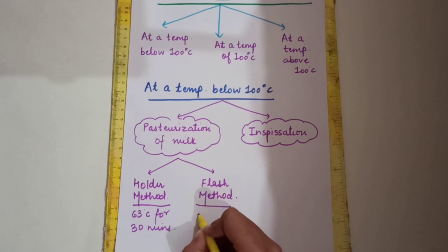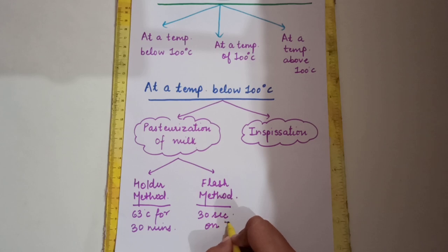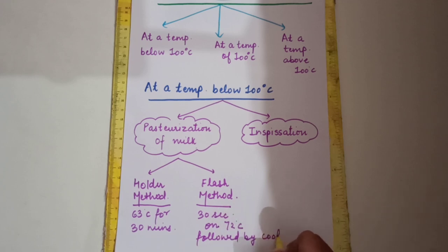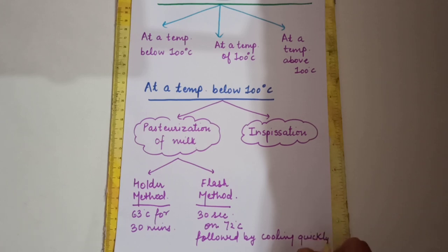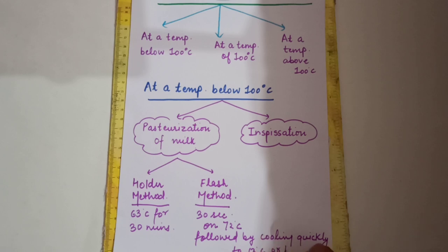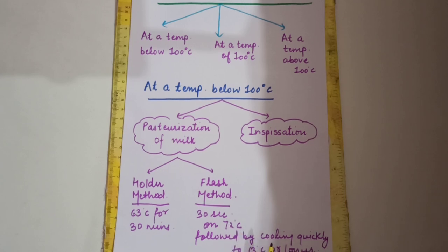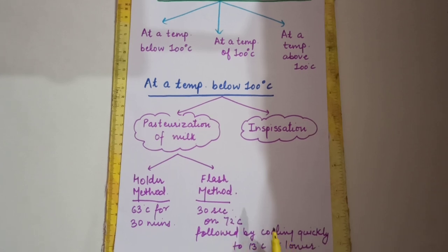In the Flash method, you keep it for 30 seconds at 72 degrees Celsius, followed by quickly cooling to 13 degrees Celsius or lower. Flash method mein aapko 30 seconds ke liye use 72 degree Celsius par rakhna hai, followed by cooling quickly to 13 degree Celsius or lower.